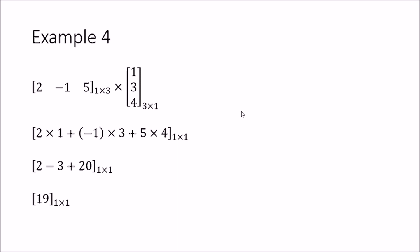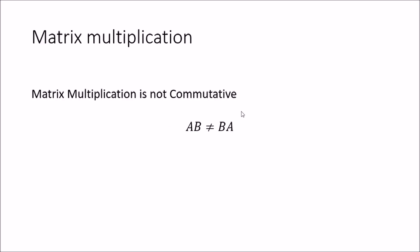From this we can see an important characteristic: matrix multiplication is not commutative. That means if we take two matrices A and B, A×B is not necessarily equal to B×A. This is a very important property to remember regarding matrices.